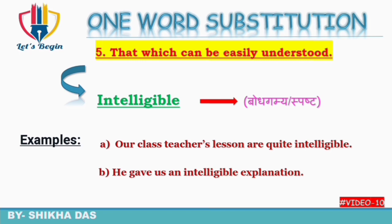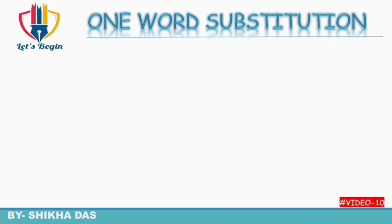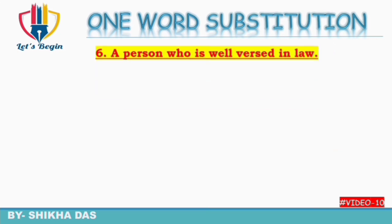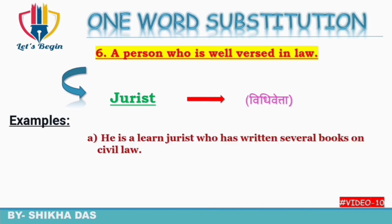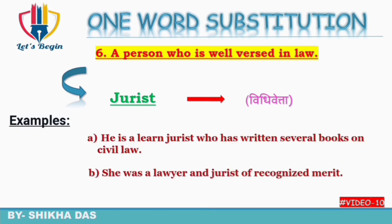Next: a person who is well versed in law — law ke baare mein achha khasa knowledge rakhne wala. Isko kehte hain 'jurist', yaani ki 'vidhi vetta'. Examples: 'He is a learned jurist who has written several books on civil law.' 'She was a lawyer and a jurist of recognized merit.' So jurist means jisko law ke baare mein achhi jankari ho.